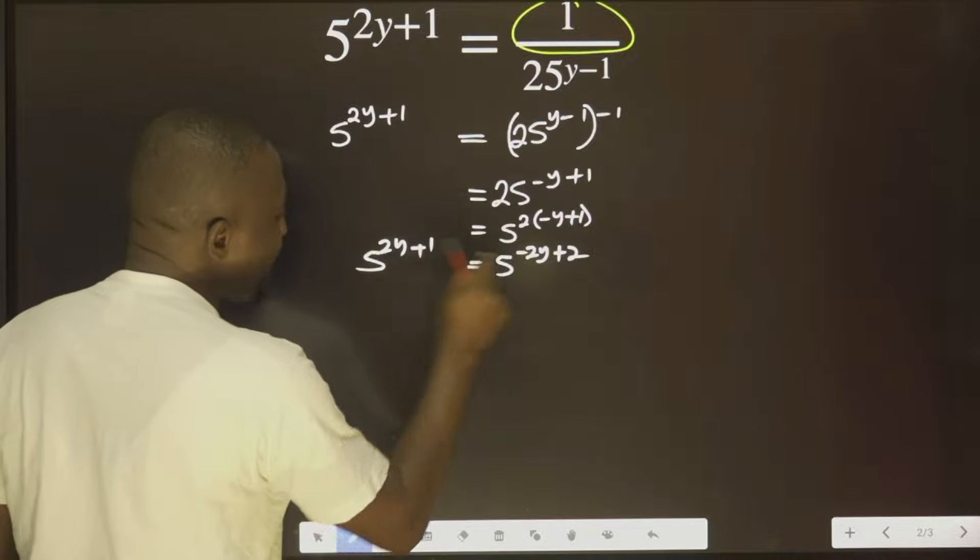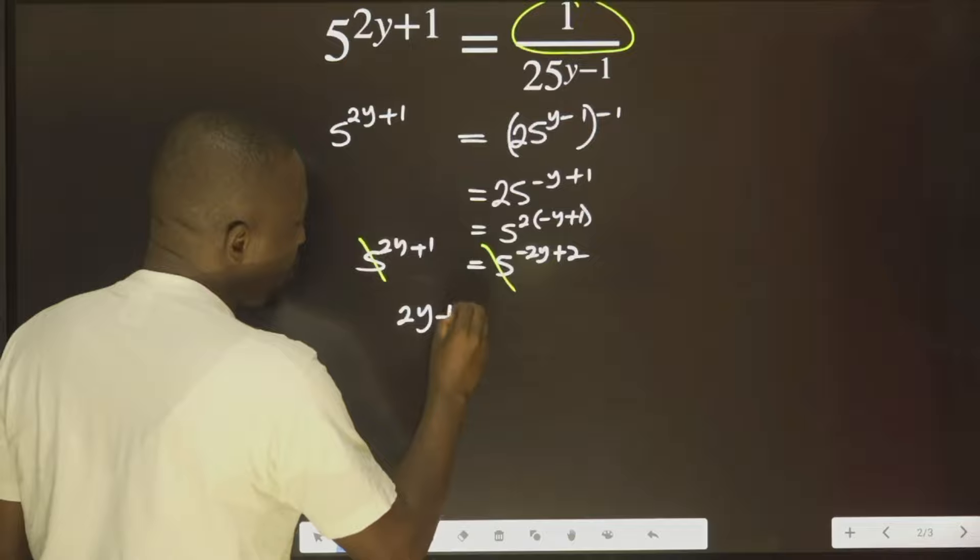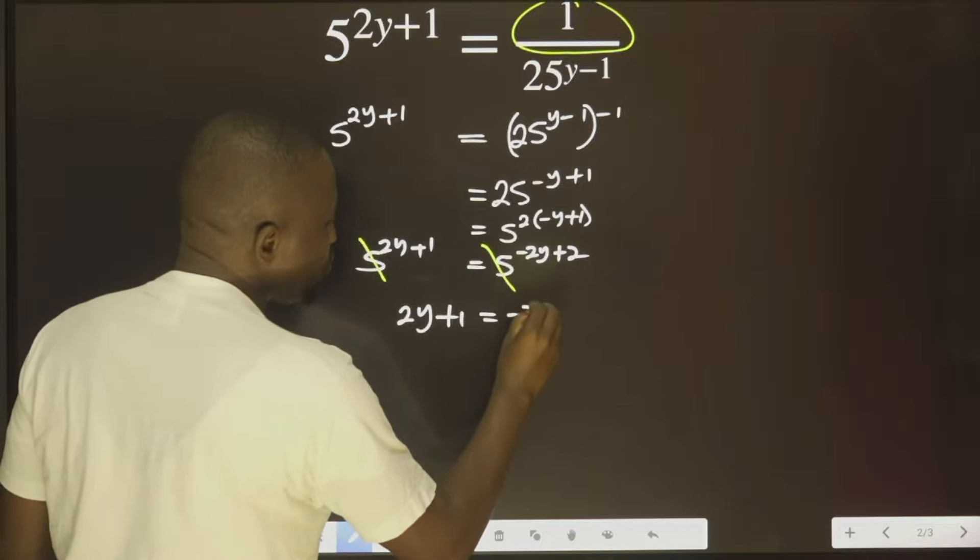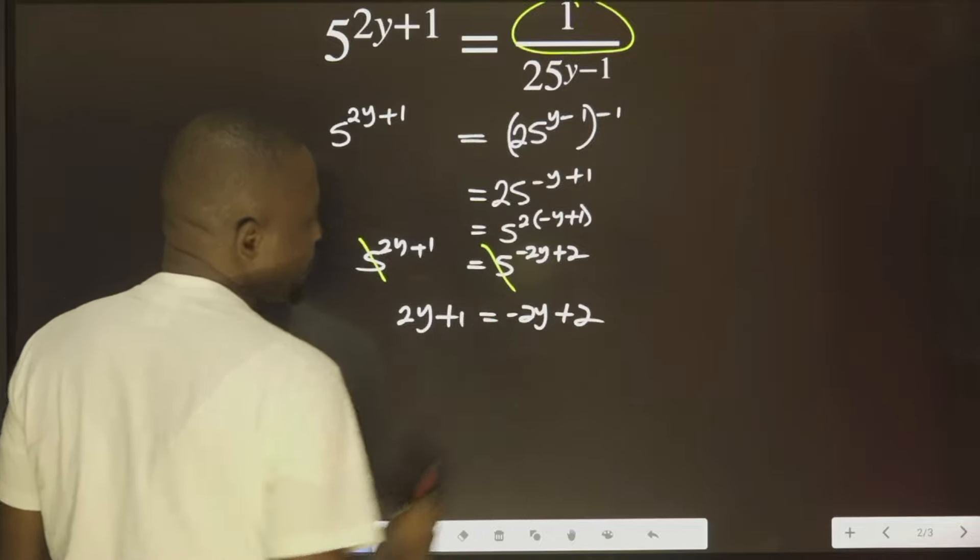You can see the bases are the same. I can just simply cancel the base. I have 2y plus 1 equals to minus 2y plus 2.